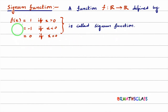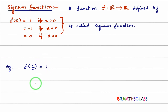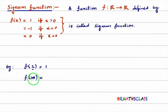Now I will try to explain this with a few examples. What is f of 2? As 2 is greater than 0, we need to choose the first function, which is f(x) = 1. So f of 2 is 1. What is f of 100? We know that 100 is greater than 0. When x is positive, f(x) is 1. So f of 100 is 1.